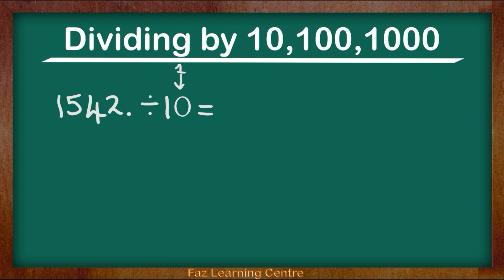So let's move one decimal to the left because we are dividing by 10. So now my decimal point is here. It has moved from the end of 2 to in between 4 and 2. So let me write this down. What is my answer showing? 1, 5, 4, decimal point 2. 154.2. That is my answer.